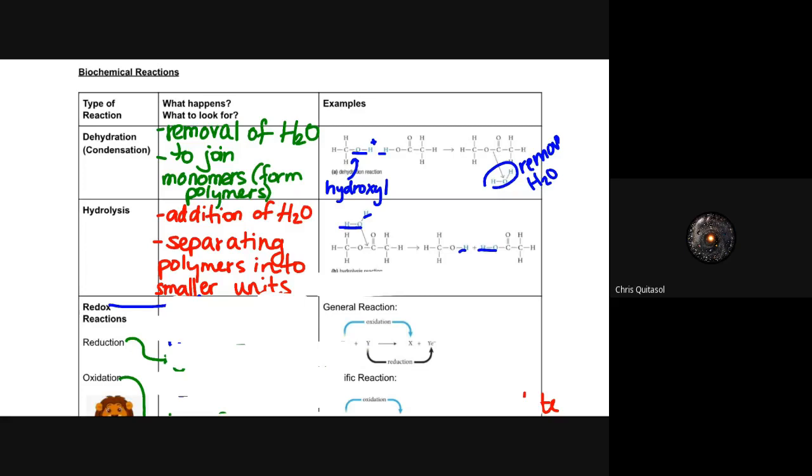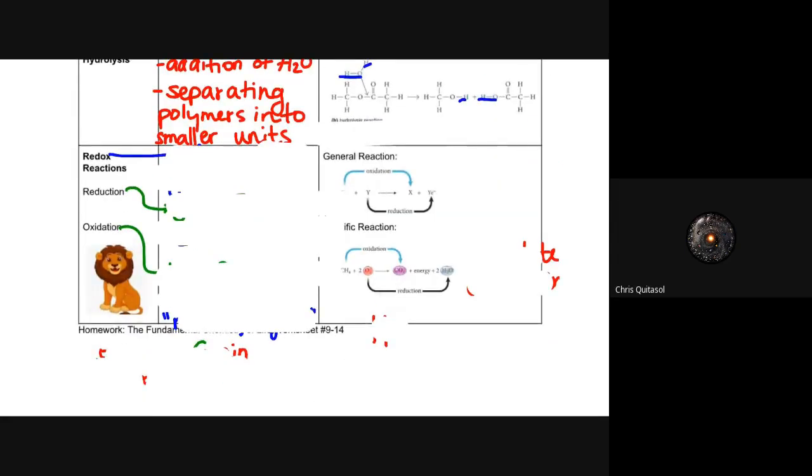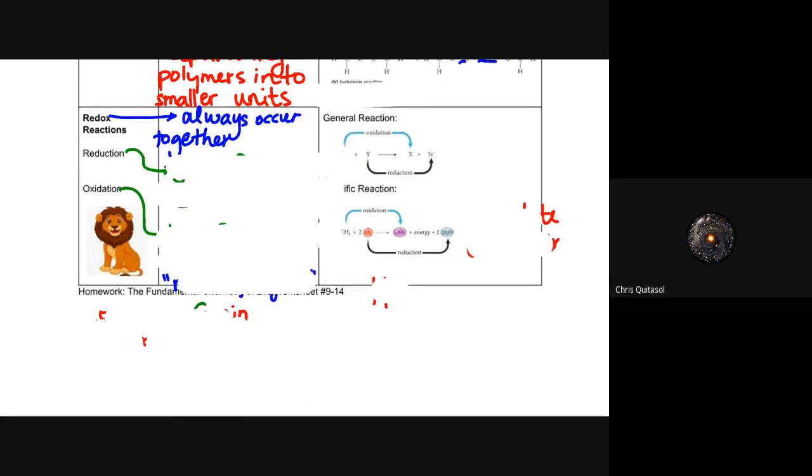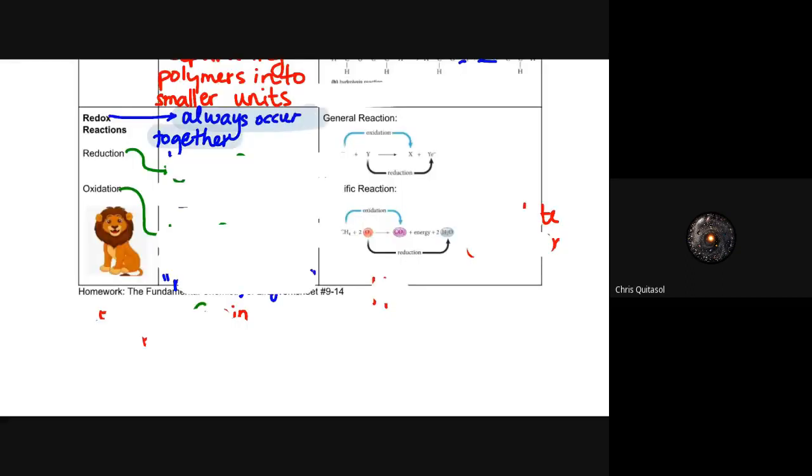A redox reaction is going to always occur together. This is the first thing I want to talk about with regards to redox reactions. I know I have a lot of stuff blurred out right now, but I'll get to it all. The key thing here that I really want to focus on is that they're always going to occur together. They very rarely happen separately, but for the sake of our understanding in this class, they're always going to happen together.